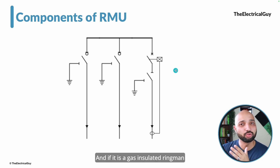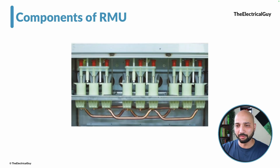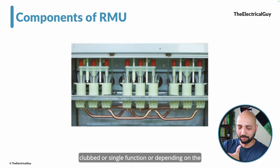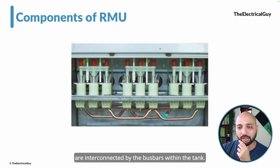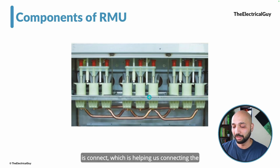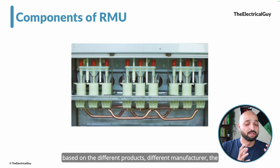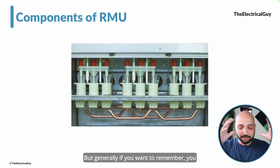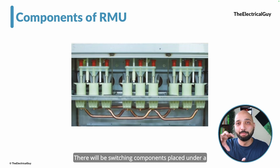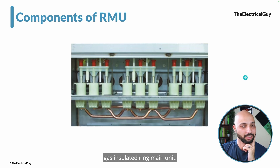If it is a gas-insulated ring main unit, then all the switching devices will be placed inside a sealed tank. All three functions — or however many functions — are clubbed inside this sealed tank, and all functions are interconnected by busbars within the tank. You can see the copper busbars connecting the different switching components. The tank design will vary based on different products and manufacturers, but generally there will be switching components placed under a pressurized gas system like SF6, if it is a gas-insulated ring main unit.